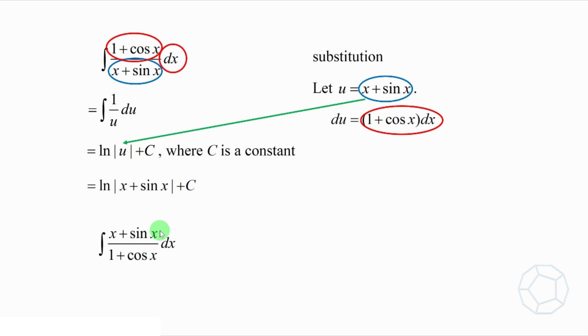Can we use the same trick for the other integral? Definitely not. We can see that multiplying 1 plus cos x and dx together gives du. But in the second integral, the term 1 plus cos x is in the denominator. So what should we do?